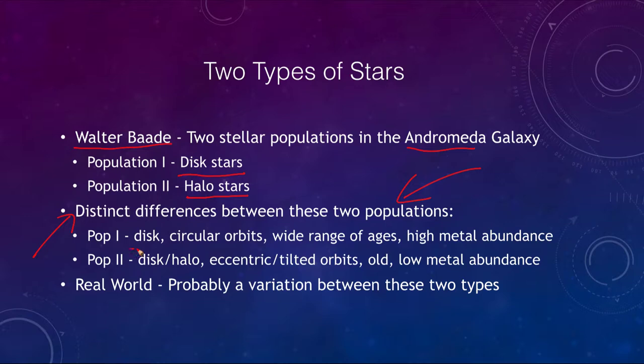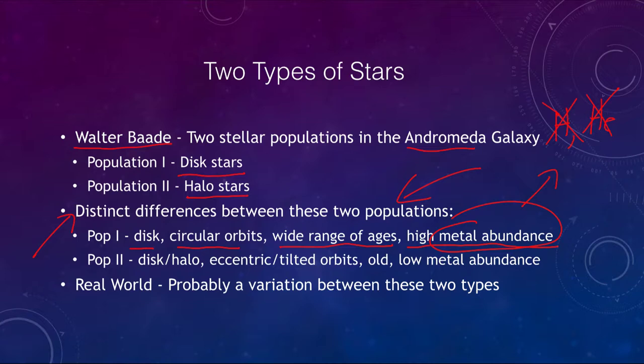Population one stars are in the disk, they have circular orbits, they have a very wide range of ages from very old to very young stars, and they have a high metal abundance. To an astronomer, a metal is anything that is not hydrogen or helium — so carbon, oxygen, and silicon are all metals to an astronomer.